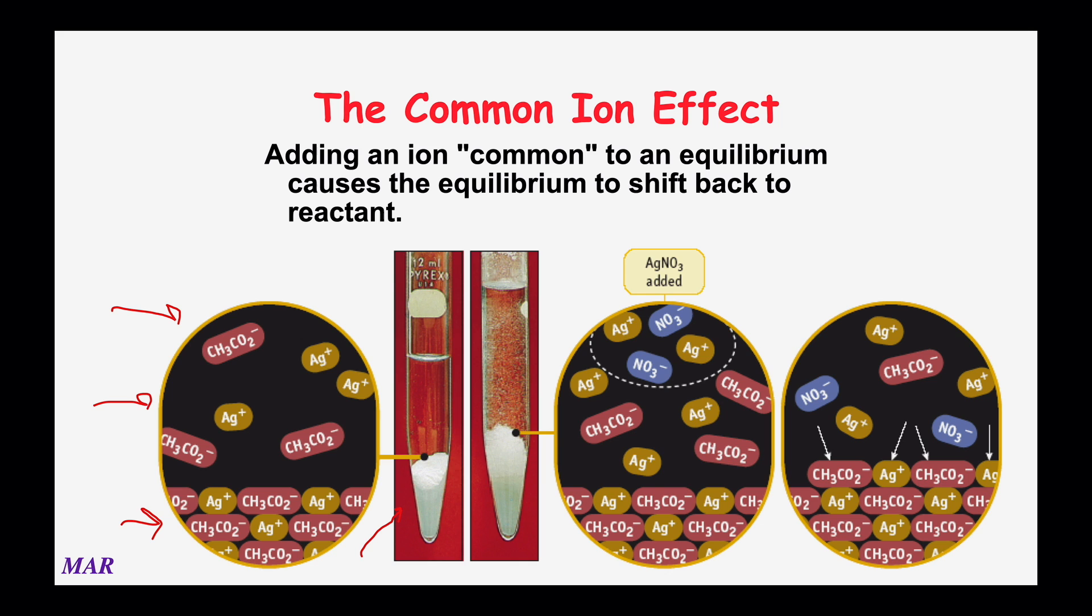So as you add more silver, you can notice in the first picture on the left you had one, two, three acetates in solution. Then it shows adding the additional silver nitrate, and finally on the right-hand side, there's only one acetate left over. Adding silver to a silver acetate equilibrium forced the reaction to move towards the solid side and more silver acetate precipitated out.